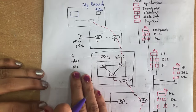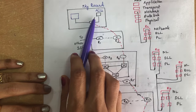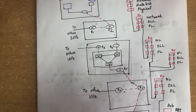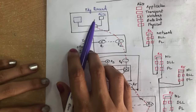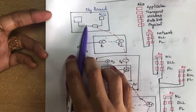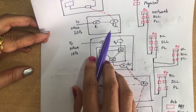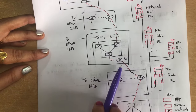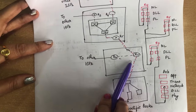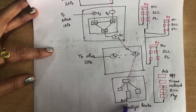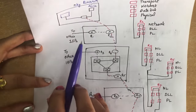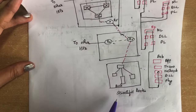We will see a simple scenario where Alice wants to send information to Bob. Alice is working in Skylab and her system is connected to many routers — router 2, then router 4, then router 5, and router 7. At last it is connected to Bob's system. We will see how this transmission takes place between Alice's system and Bob's system.